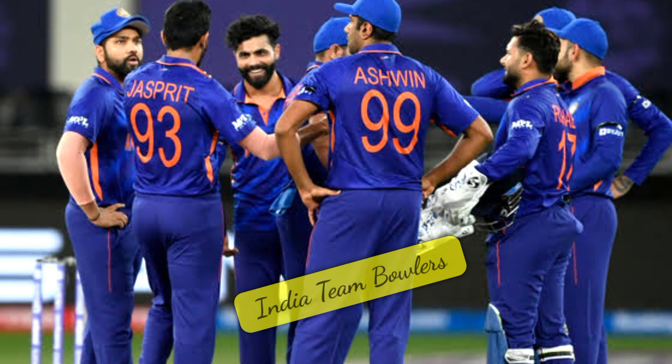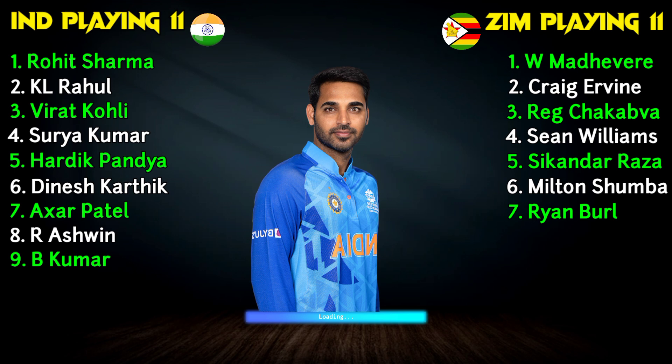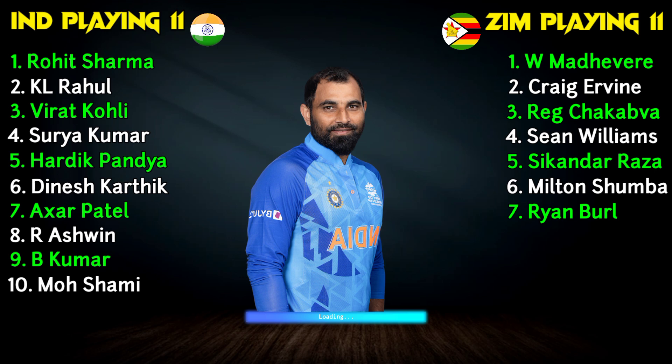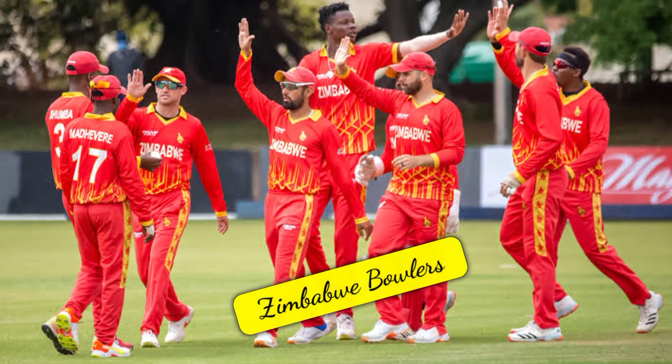No.8 Rafi Chandu Naswin, all-rounder. No.9 Bhuvineswar Kumar, fast bowler. No.10 Mohammed Shami, fast bowler. No.11 R. Deepak Singh, fast bowler. Zimbabwe team bowlers: